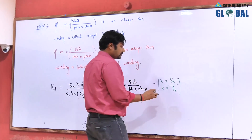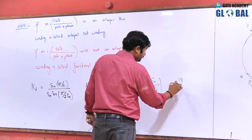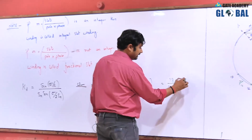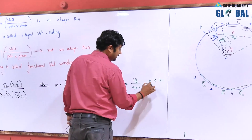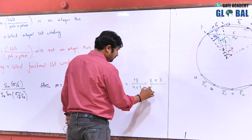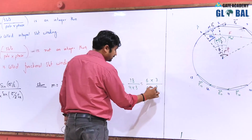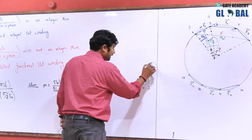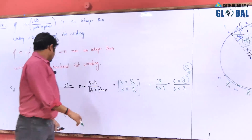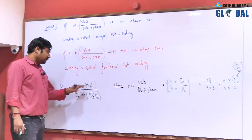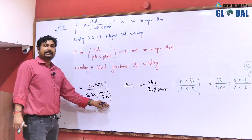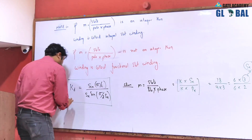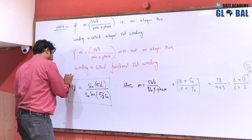For example, with 18 slots, 4 poles, and a 3-phase machine, the highest common factor is 6, so they cancel out. This result is what we call S_k. Instead of using m, we place S_k for a fractional slot winding. Keep this in mind — it is very important from a GATE point of view.